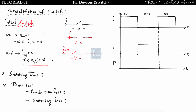In the off state, current equals zero and the switch can withstand infinite voltage during turn-off. Representing this on a graph: when the switch is on, it can take any amount of current while voltage across the switch is zero up to time t1. When the switch turns off, current suddenly reduces to zero and voltage suddenly increases to some finite value V. This is the off state.